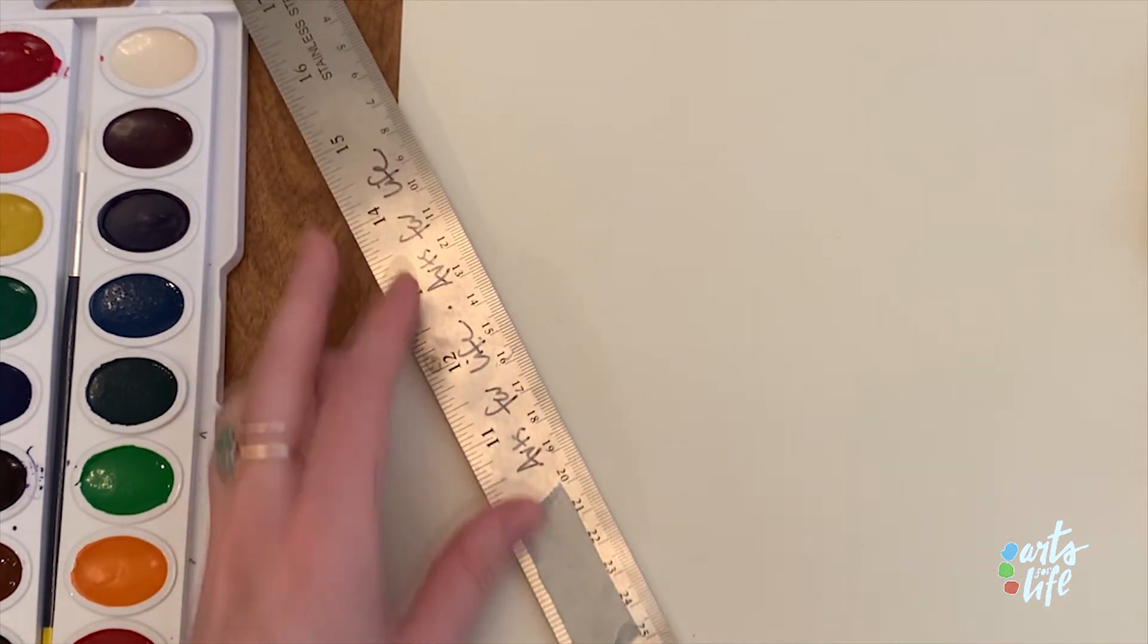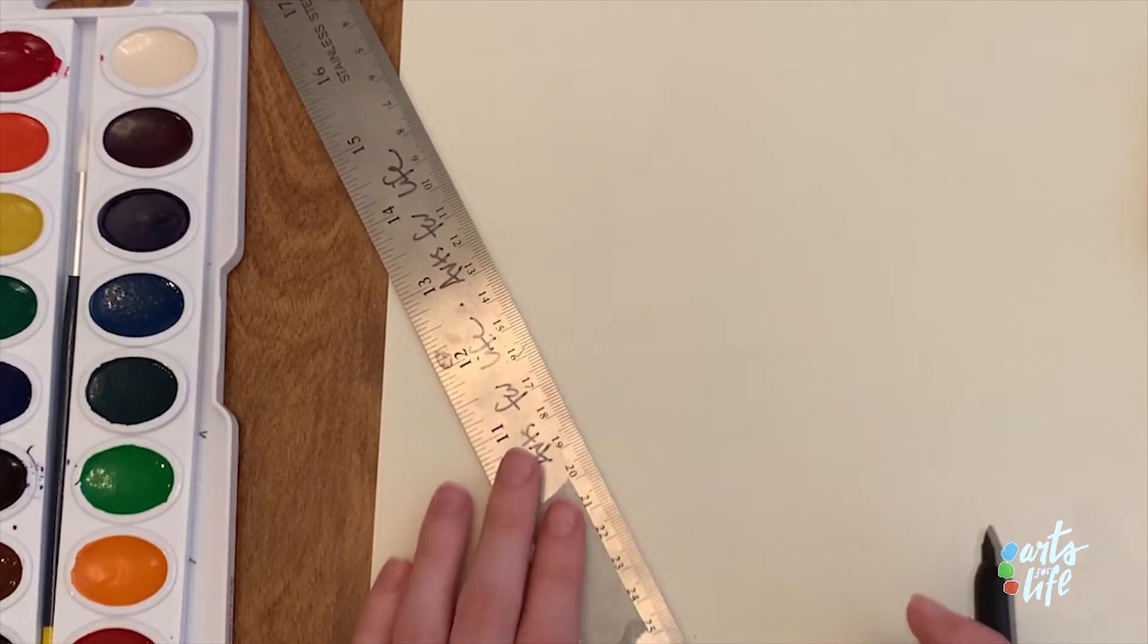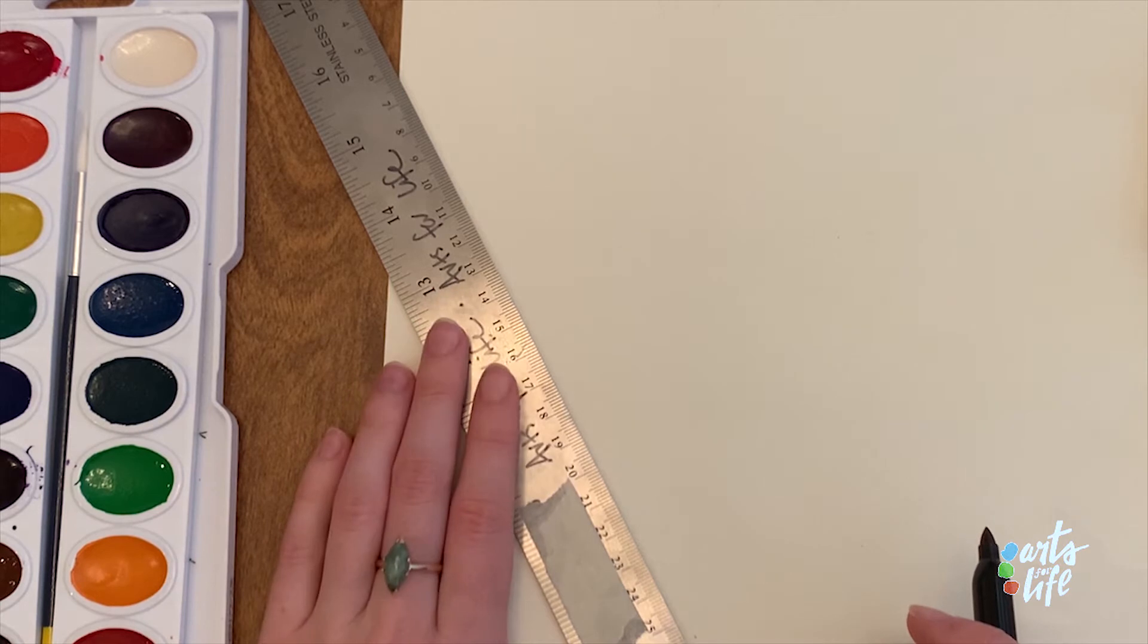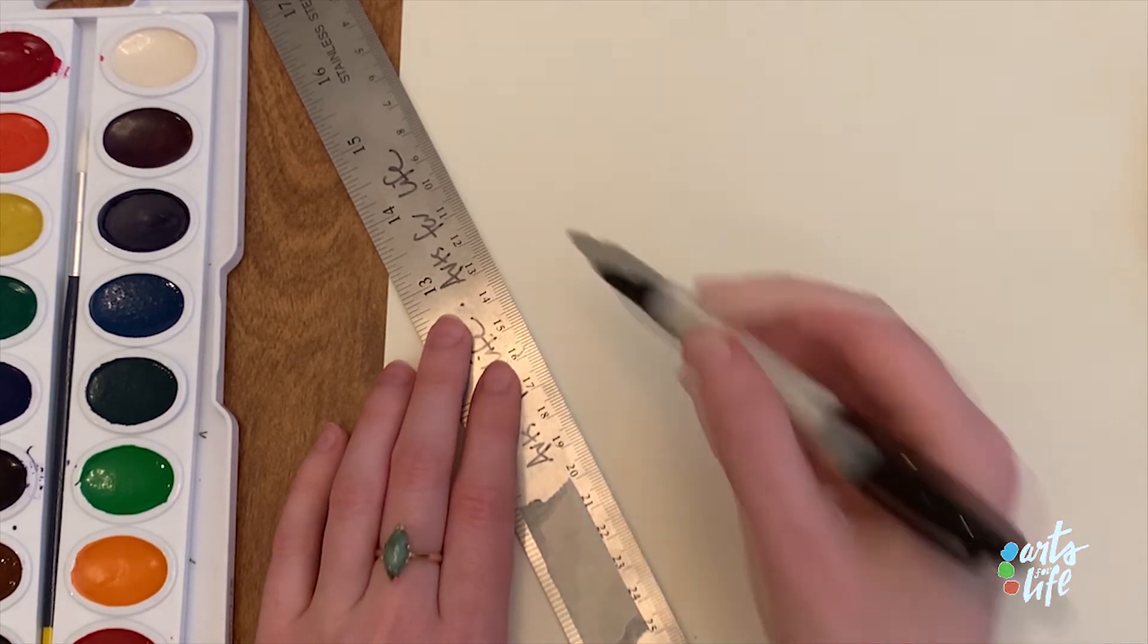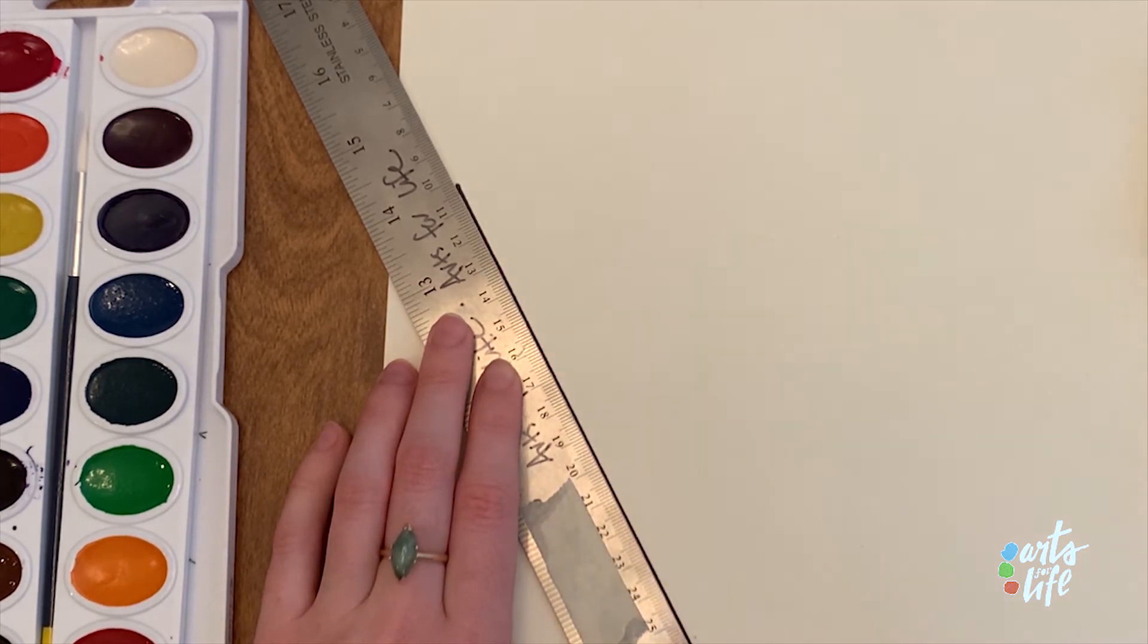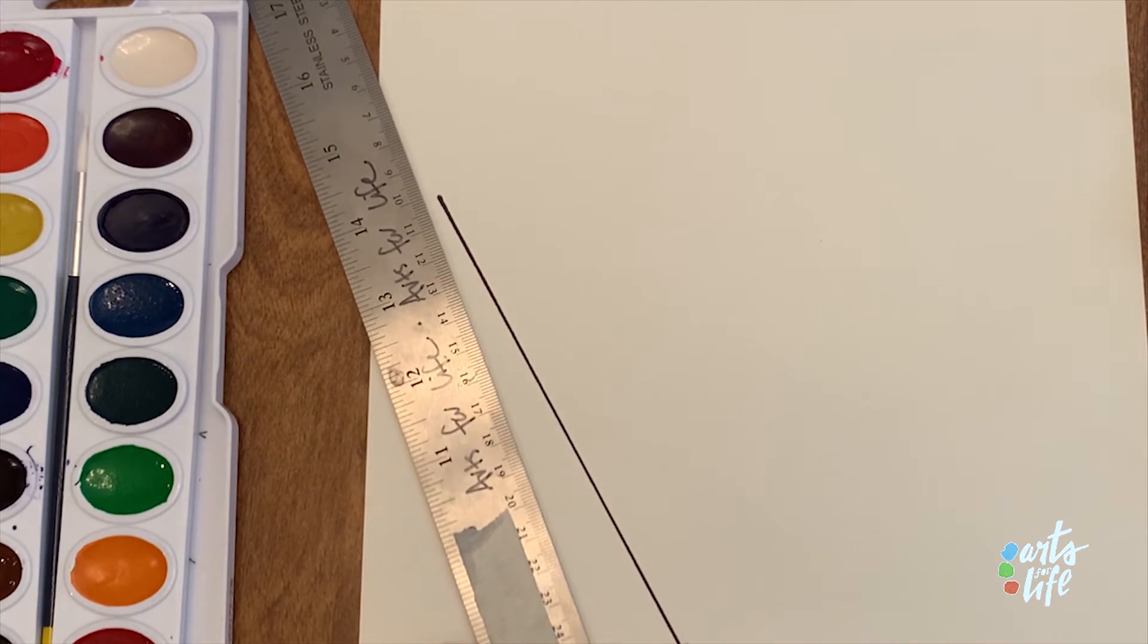And I am going to line it up to a point over here that I want one of the edges of my gem to be. So I'm just going to choose a point right here and I'm going to connect it to that dot.